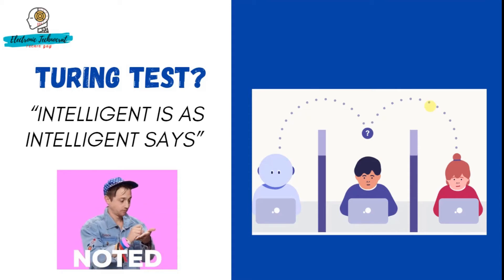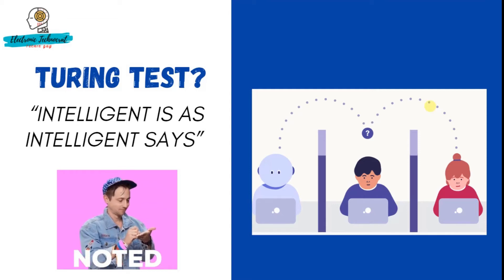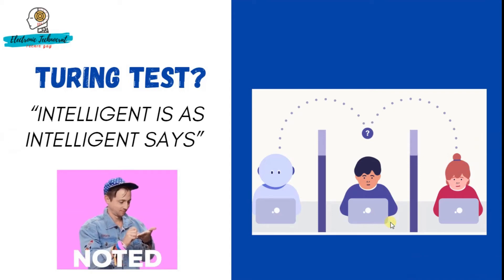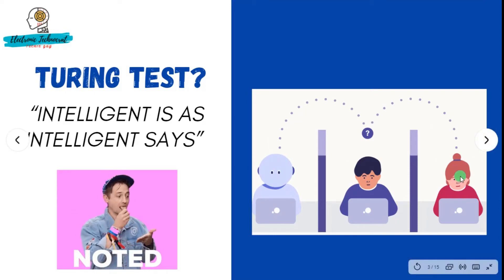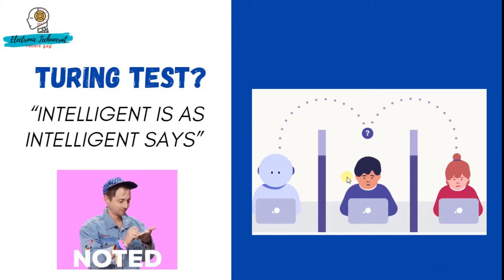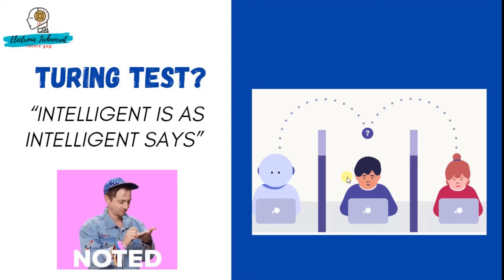Now let's understand what exactly the Turing Test was. In this test, there was a human interrogator who was interacting with two players, A and B, by exchanging written text messages in a chat. If the interrogator cannot determine which player — A or B — is a computer or which is a human, the computer is said to pass the test. The argument is that if a computer is indistinguishable from a human in general natural language conversation, then it must have reached human-level intelligence.